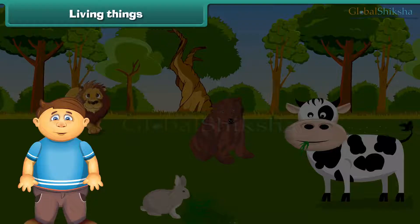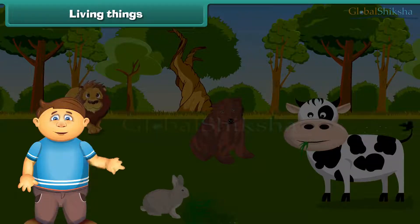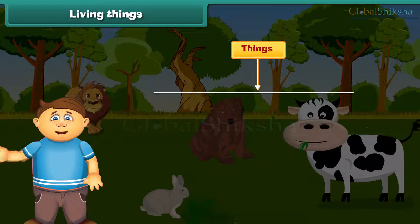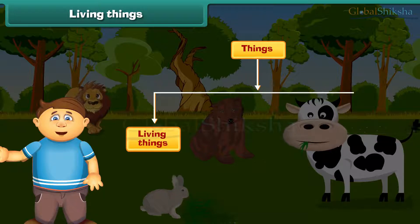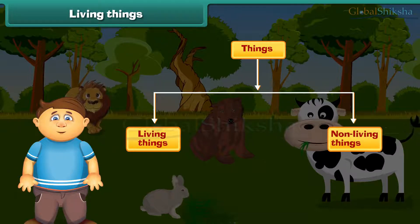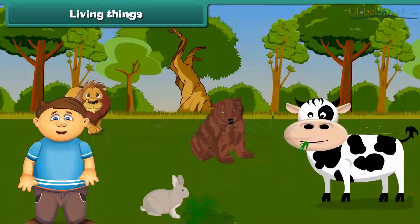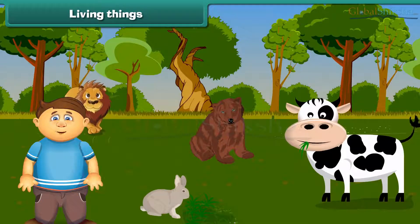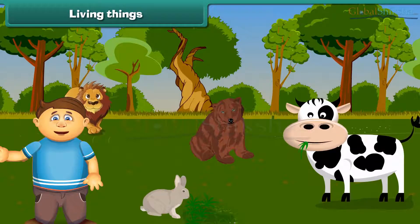Dear students, we are all surrounded by two kinds of things: living and non-living things. All animals and plants are examples of living things.